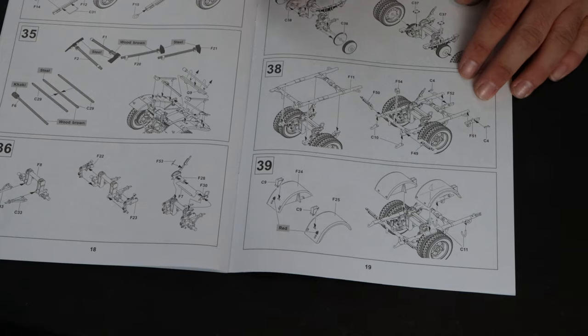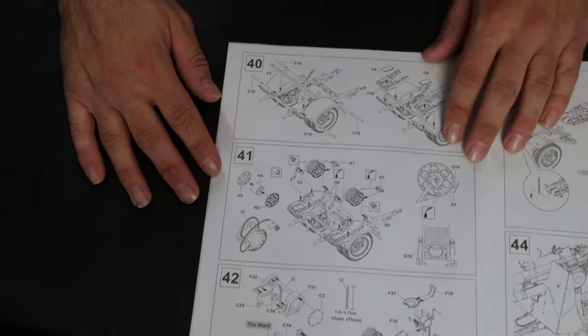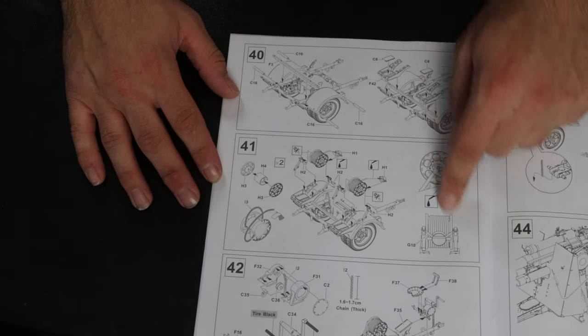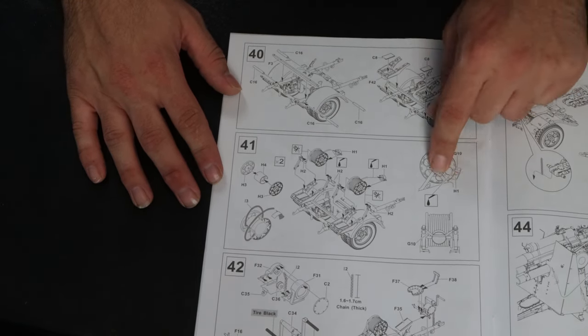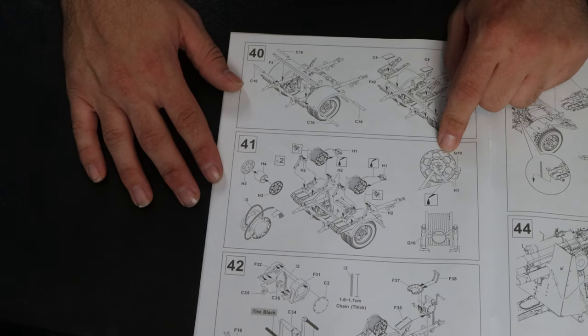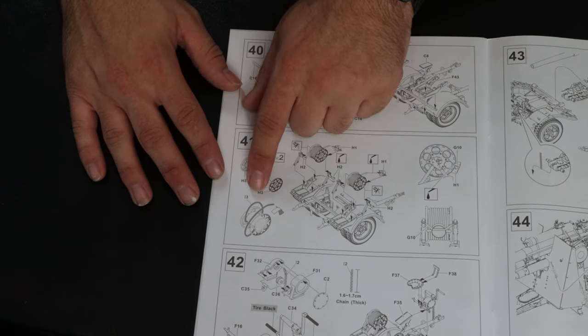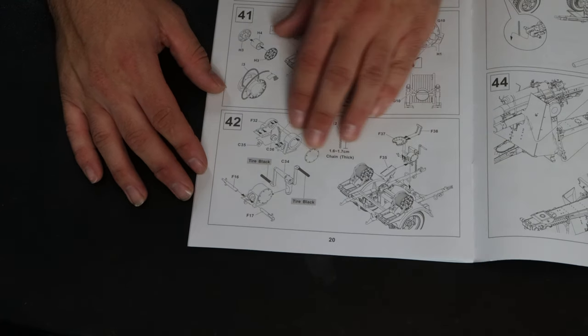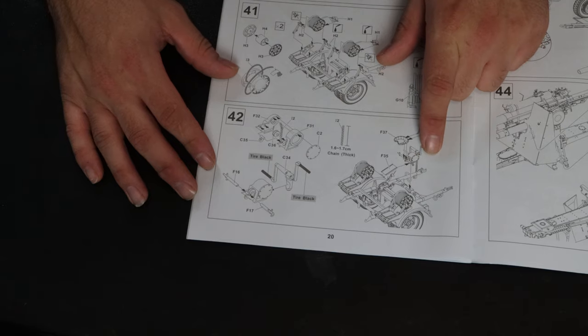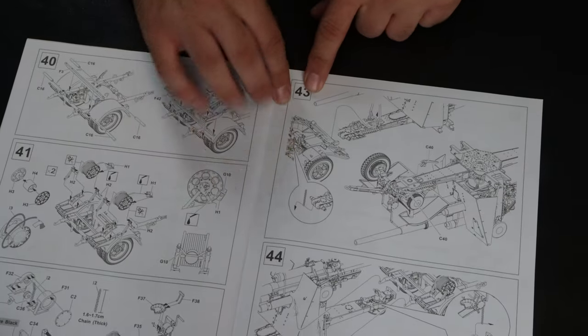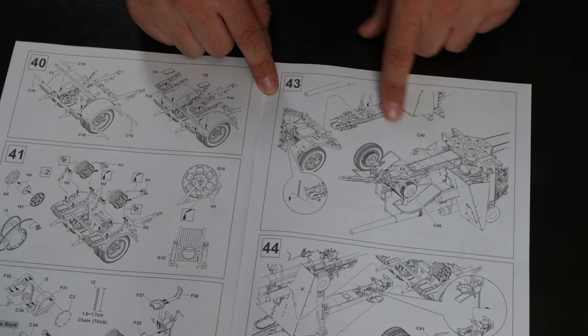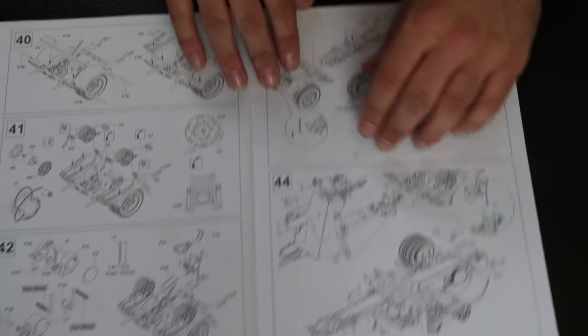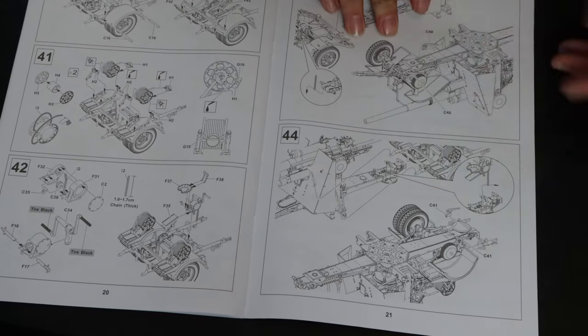And step 38. 39, the fenders. 40 is just a bunch of detail parts. 41, you're building up these drums. I assume that's where the spool or the coil of the fishing line gets added. It doesn't say how much, but I'm assuming maybe all of it. 42, building up more of the transport stuff for it. 43 is actually fitting the gun to the transport dolly. Same with 44, adding one end and then the other.